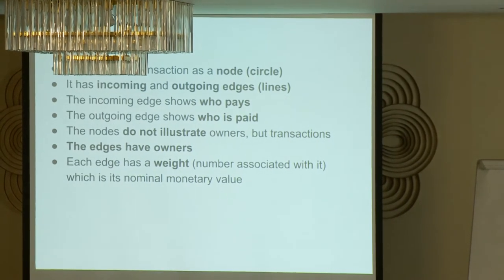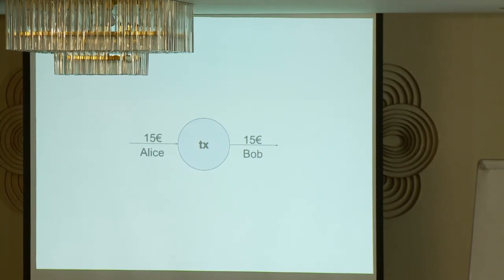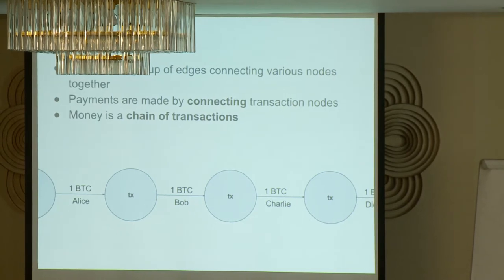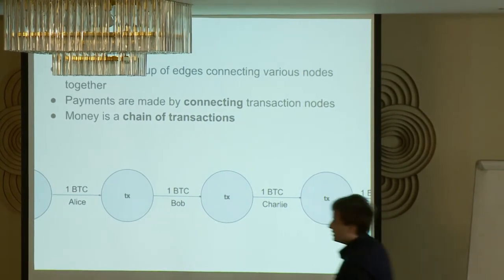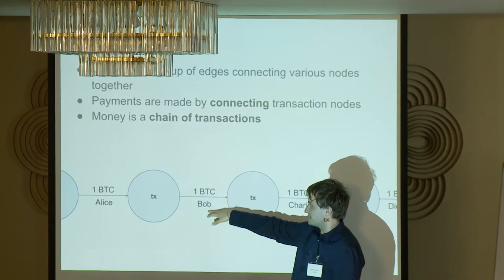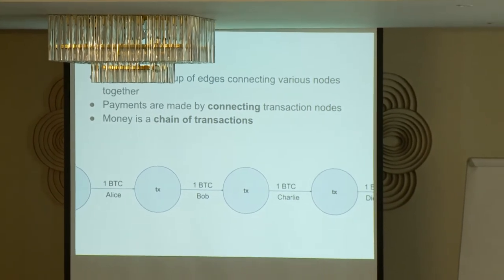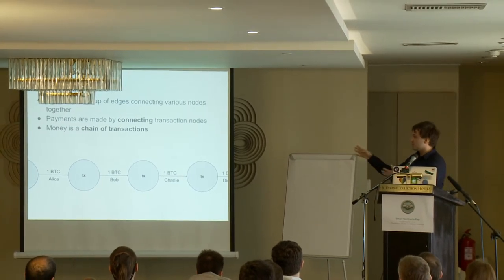Each transaction edge has some value associated with it — it could be euros conceptually, but Bitcoin is its own currency. When you start making payments, these things form a transaction chain, where people hand over Bitcoin from one to the next. Here a coin owned by Alice goes into a transaction where Alice pays Bob, then Bob pays Charlie, then Charlie pays someone else. This is different from the blockchain, which is a consensus layer for confirming these transactions — this is just a series of payments.